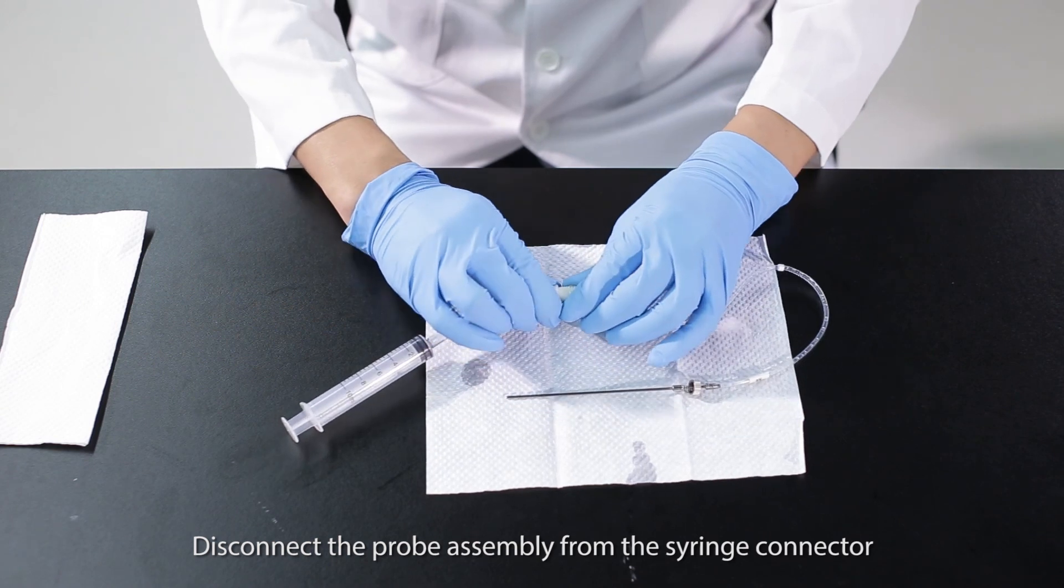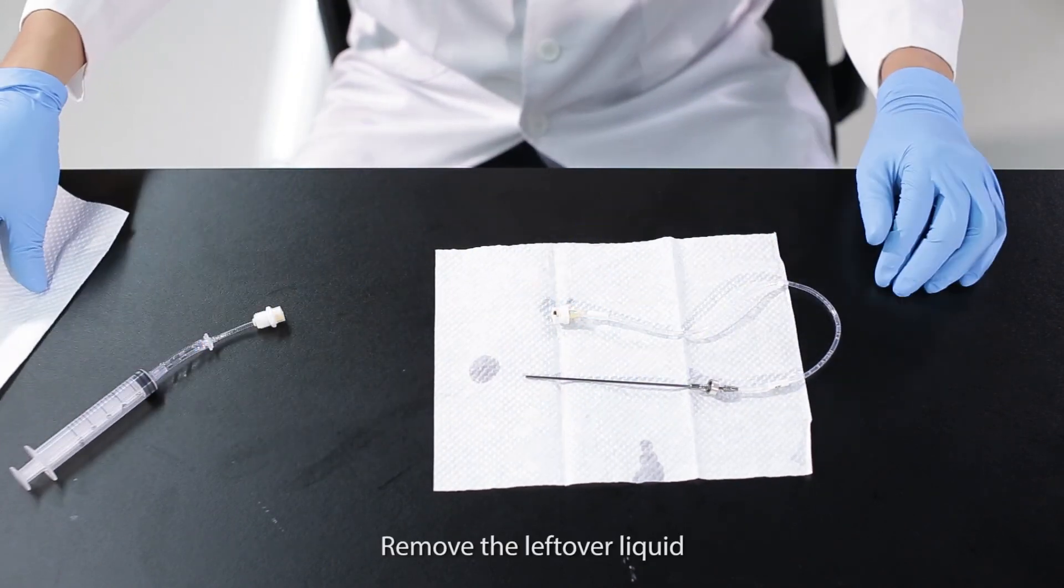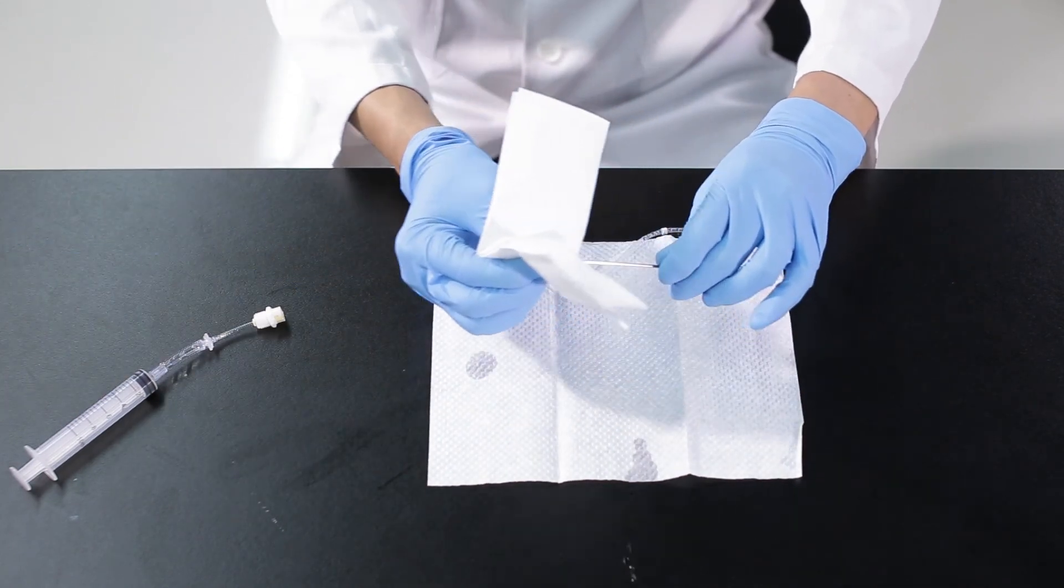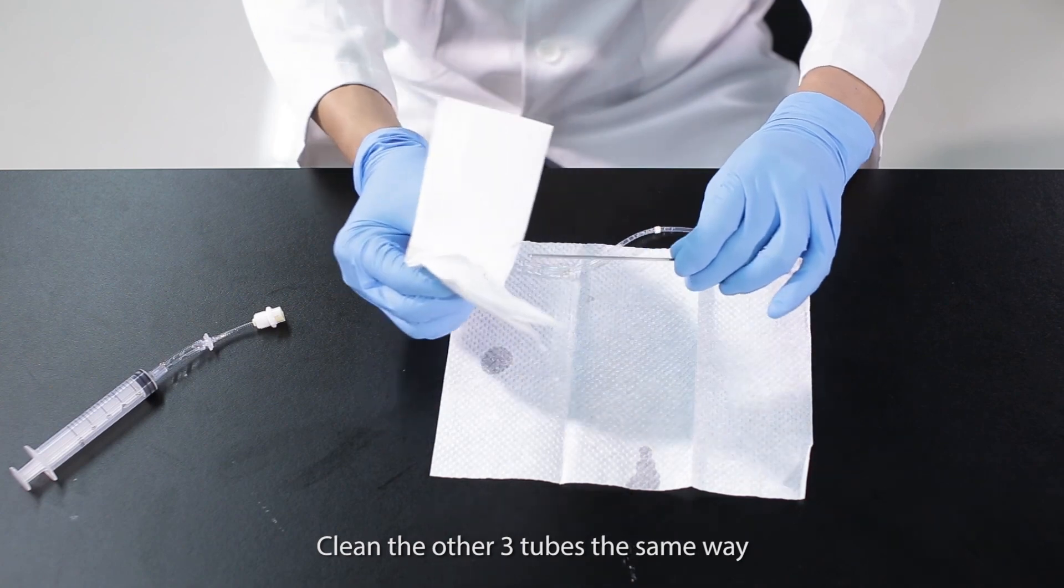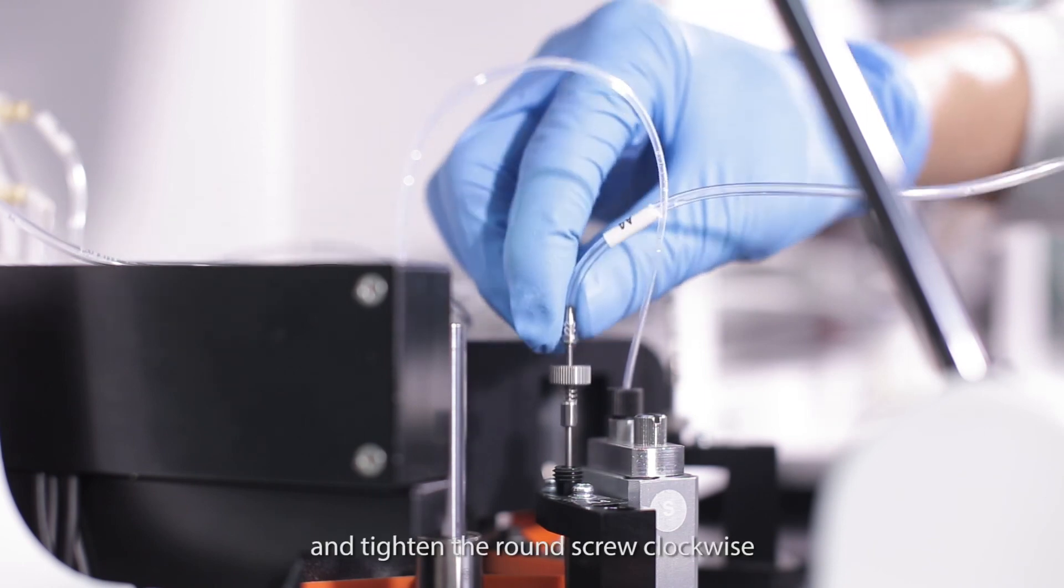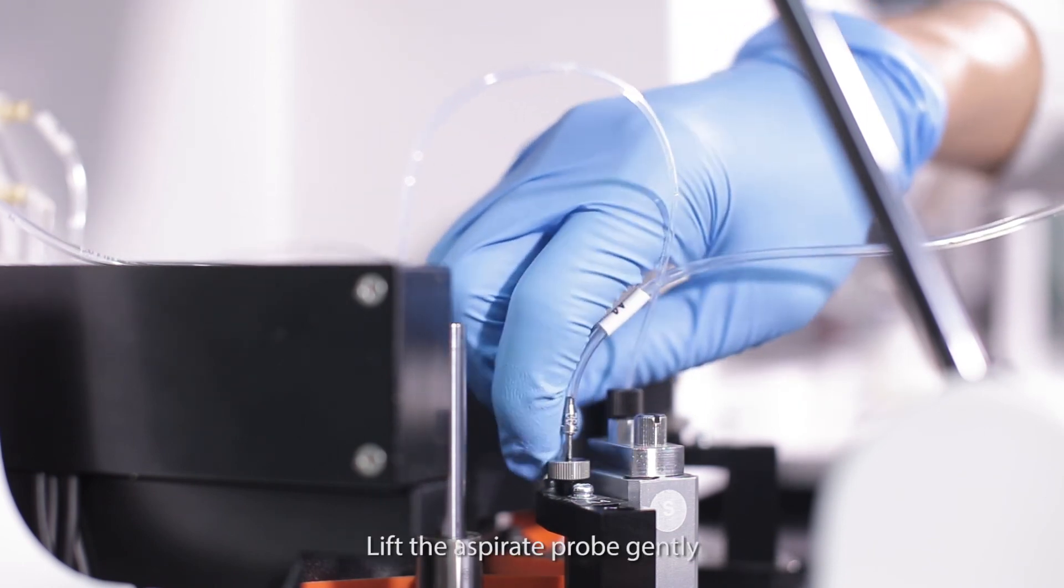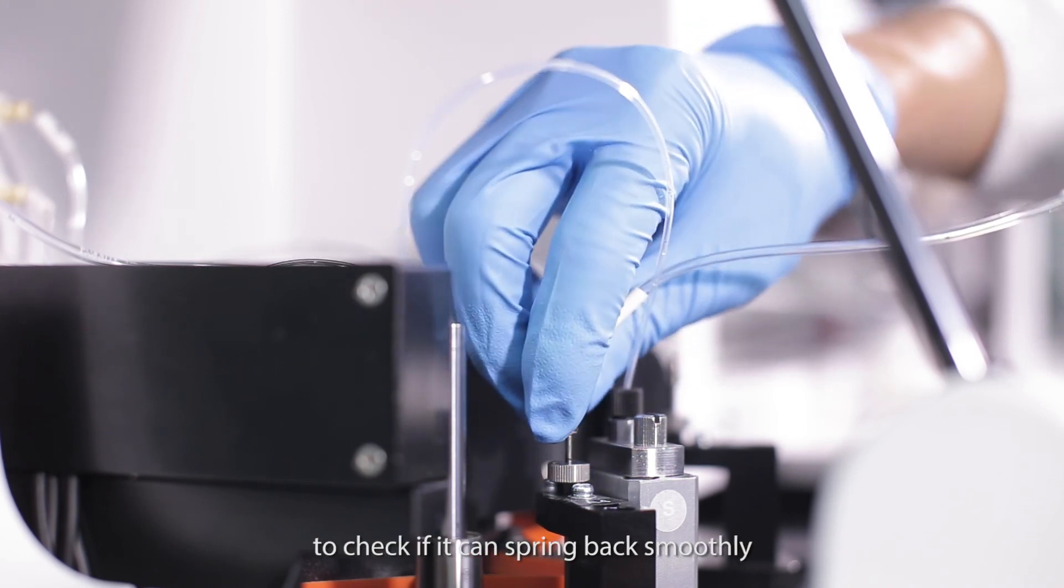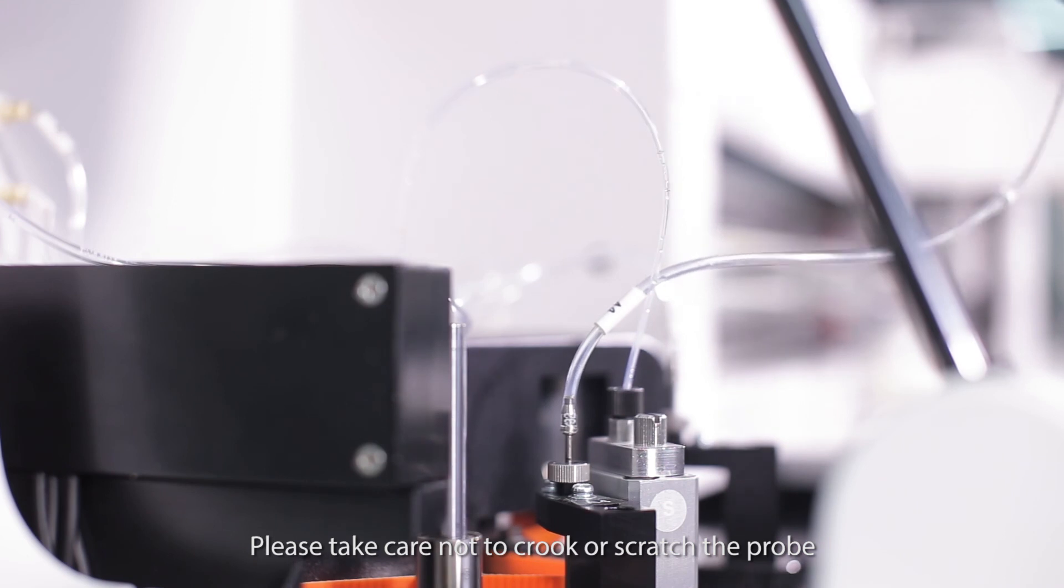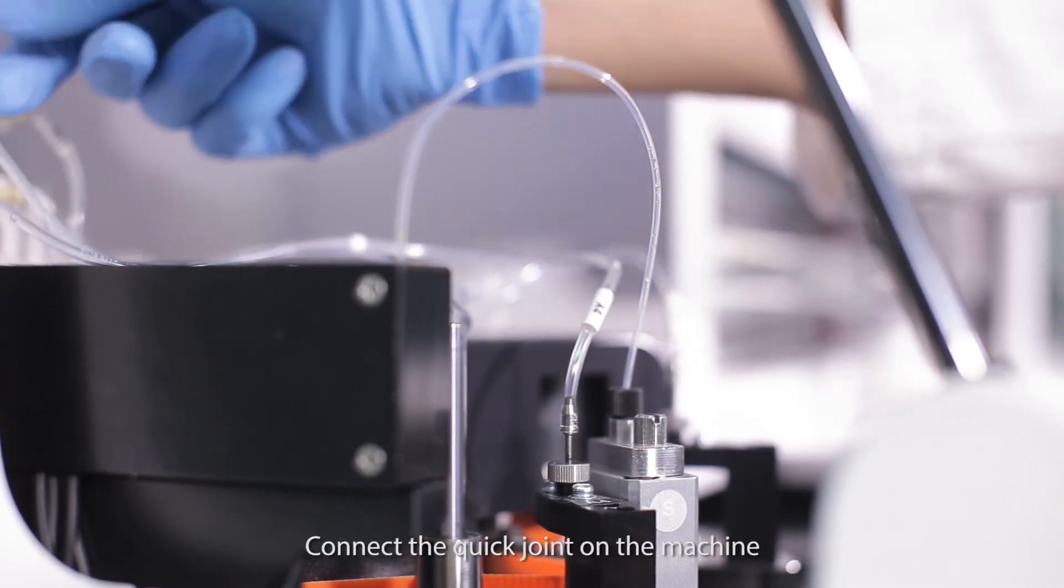Disconnect the probe assembly from the syringe connector. Remove the leftover liquid and use clean tissue to dry the probe exterior. Clean the other three tubes the same way. Install back the probe on the plate and tighten the round screw clockwise. Lift the aspirate probe gently and check if it can spring back smoothly. Please take care not to crook or scratch the probe. Connect the quick joint on the machine.